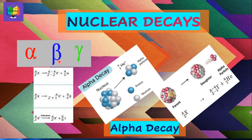Radioactive decay transforms a nucleus by emitting different particles. In alpha decay, the nucleus releases an alpha particle, an alpha nucleus. In beta decay, the nucleus either emits an electron and antineutrino, or a positron and neutrino, or captures an atomic electron and emits a neutrino.